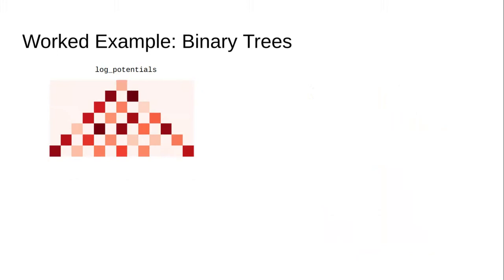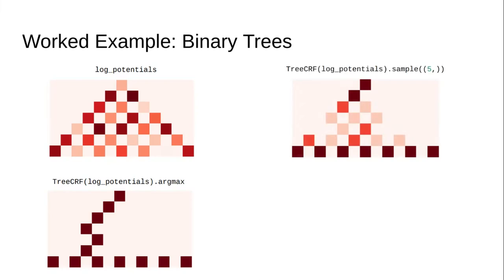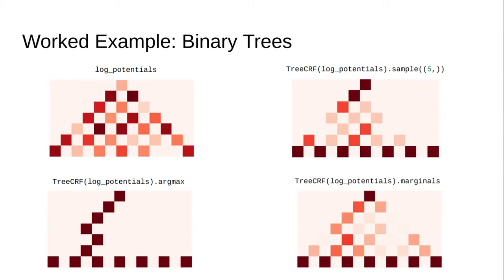Once we have these log potentials, we can compute specific properties of this distribution. If we want the highest scoring or most likely tree, we simply compute the argmax. If we want to sample from the distribution, we can sample five different trees where each square represents how often a given split occurred. Finally, we can compute the marginal distribution, where each square represents the exact likelihood of a given split occurring within the full distribution. This is the complete API of TorchStruct — you specify log potentials as a tensor, then query properties like argmax, sampling, and marginals in a single line of code.